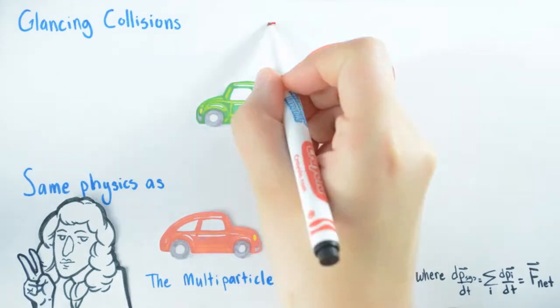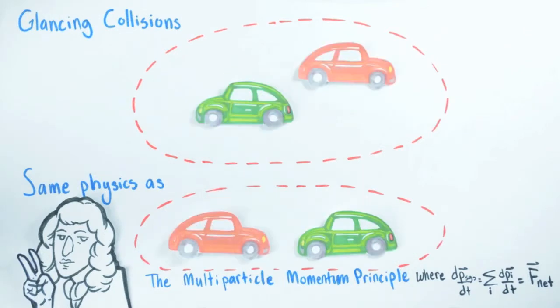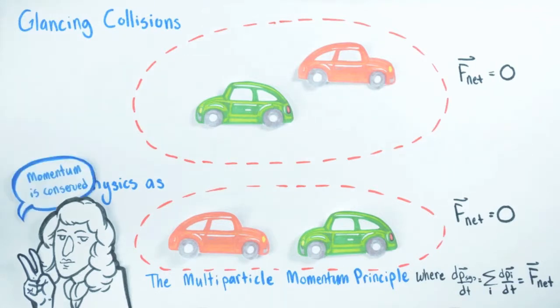In particular by choosing the system to contain all the colliding particles, then once again in effect before, during, and after the collision, the net interactions with the surroundings expressed as F net are in essence zero. So once again Newton's second law will tell us the system's momentum is conserved.